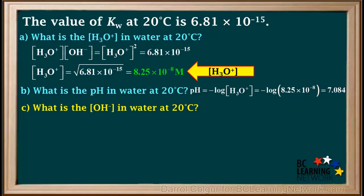But be careful. We cannot use 1 times 10 to the negative 14th divided by the hydronium ion concentration here because we're not at 25 degrees.